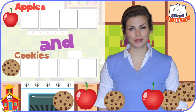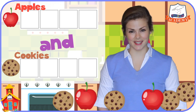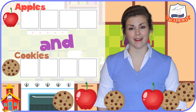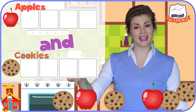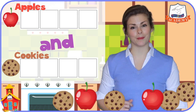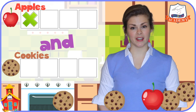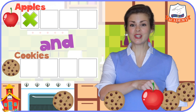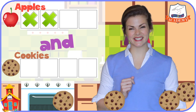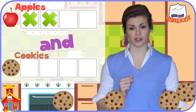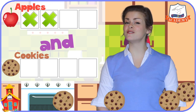Let's start with the apples. For each apple we have, we will put a big X in one of the boxes on the picture graph. So for this apple here, we will put an X in the box next to the apple in our picture graph. Now we have another apple, so let's put another X. The row next to the picture of the apple has two X's because we have two apples.